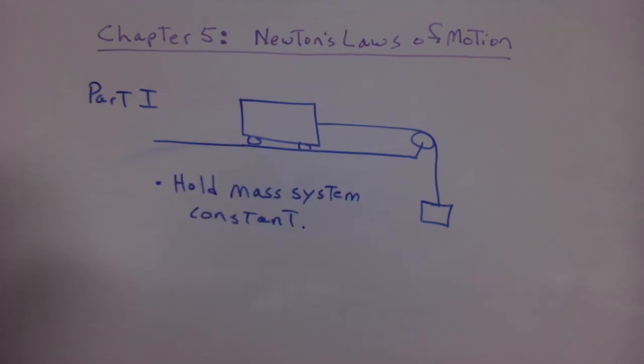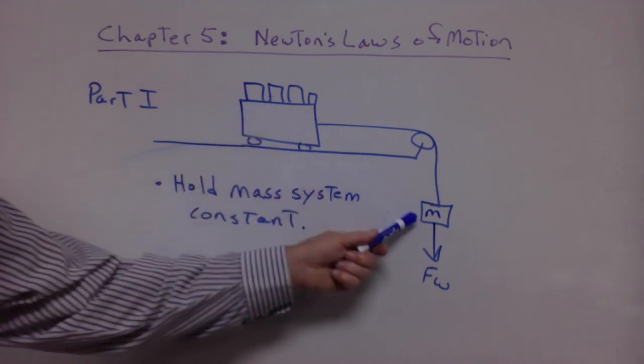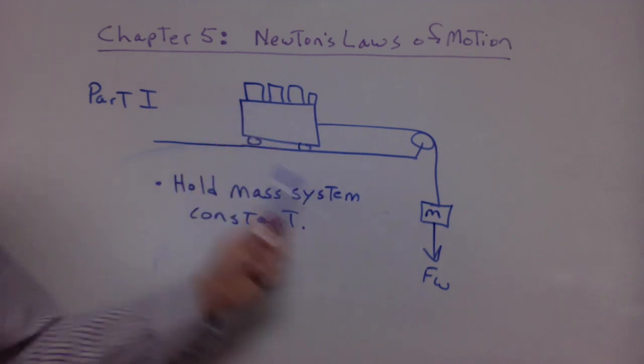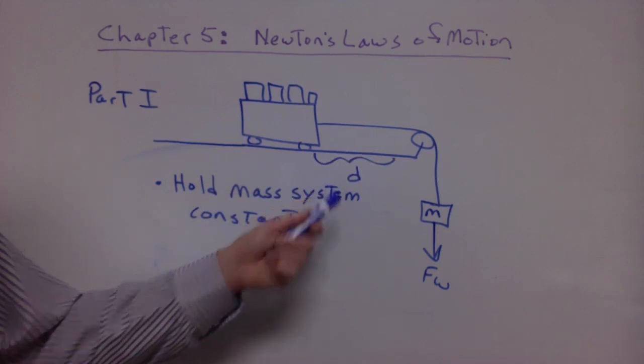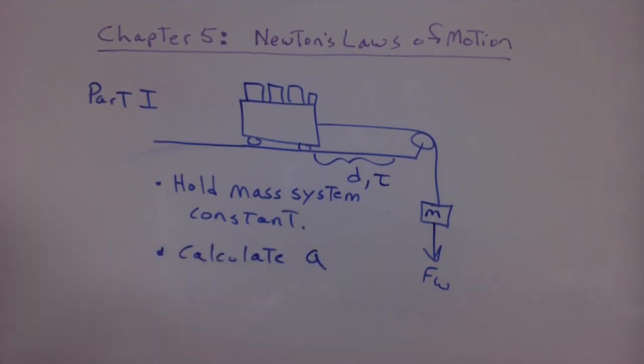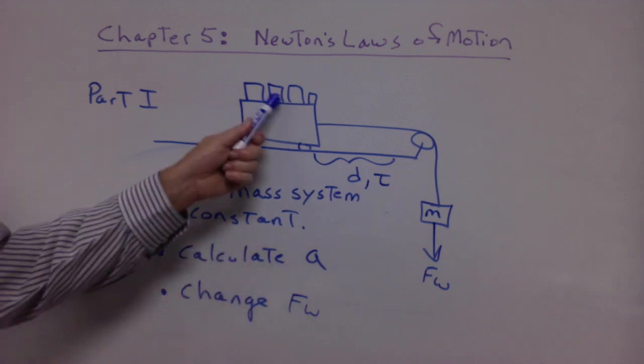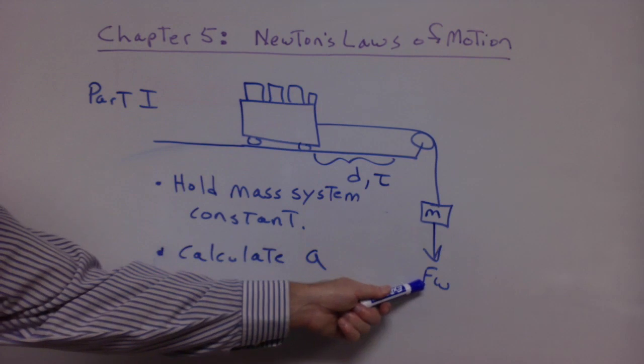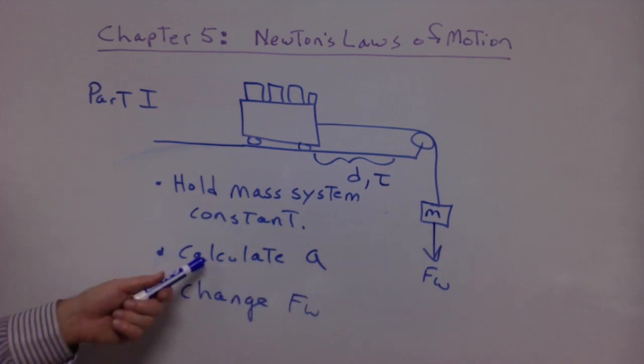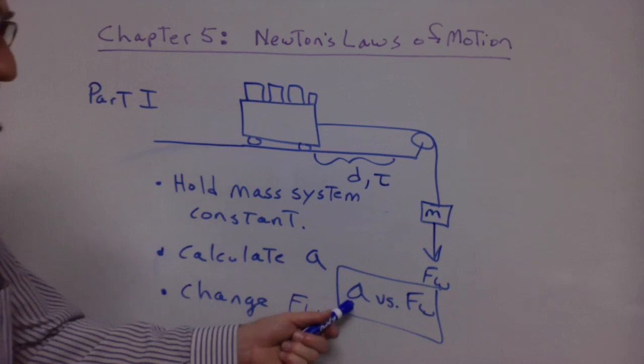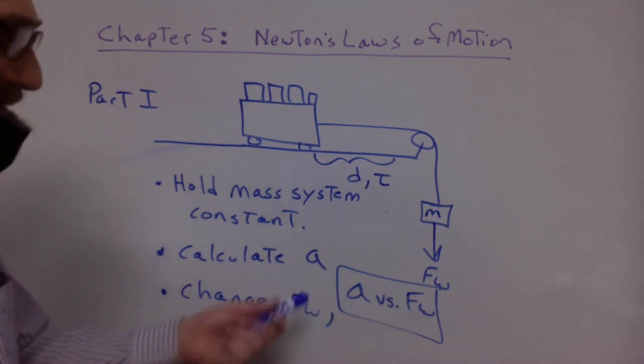Part one, we're holding the mass of the system constant. We put a mass out here. That's the weight that's going to accelerate the whole system. We measured the distance. We measured the time. You calculate the acceleration. We change Fw simply by bringing this mass back, holds the mass of the system constant, take a different mass and put it out here. As you increase the Fw, you calculate the acceleration again. Make a graph of acceleration versus Fw. Is there a relationship?